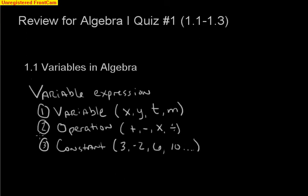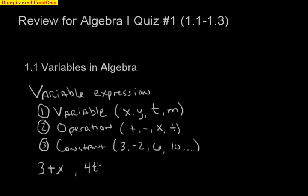Quick examples of a variable expression: three plus X — three is your constant, addition is your operation, and X is your variable. Something like 4T is also a variable expression — you have your constant four, your variable T, and multiplication is going on there as well. So there's a quick review of a variable expression.